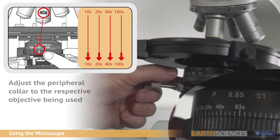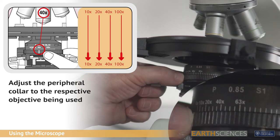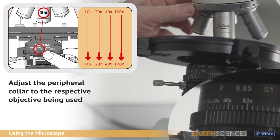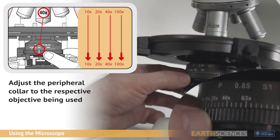The condenser contains the aperture diaphragm which is operated by the peripheral collar. Suggested positions for this in relation to the objective used are shown on the diaphragm.